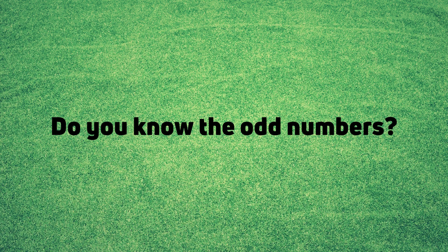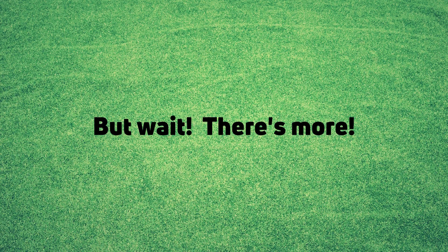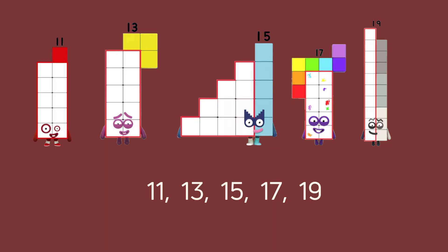Do you know the odd numbers? One, three, five, seven, nine. But wait, there's more. Eleven, thirteen, fifteen, seventeen, nineteen.